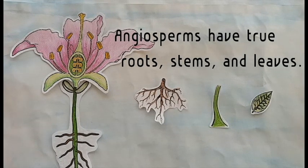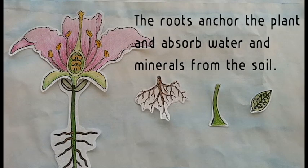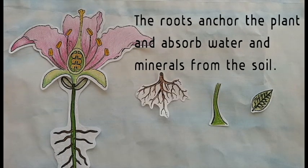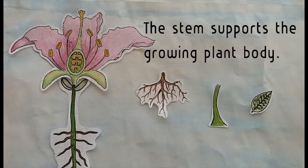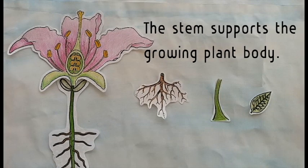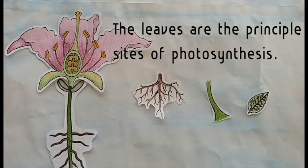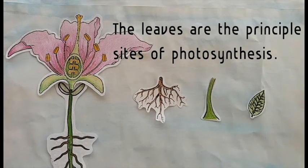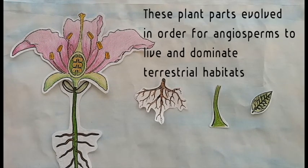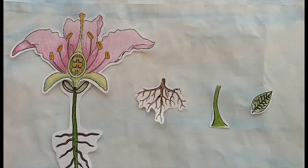Angiosperms have true roots, stems, and leaves. The roots anchor the plant and absorb water and minerals from the soil. The stem supports the growing plant body. The leaves are the principal sites of photosynthesis. These plant parts evolved in order for angiosperms to live and dominate terrestrial habitats.